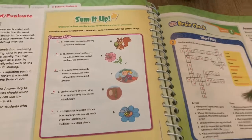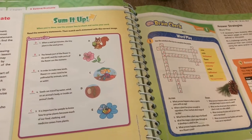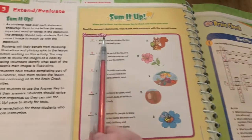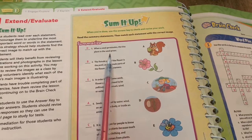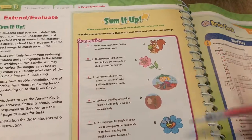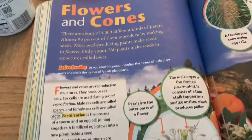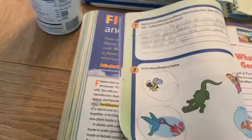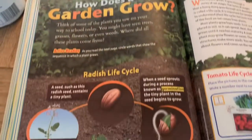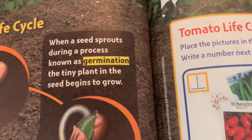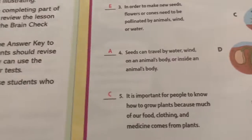Hey boys and girls, we are going to quickly go over the Sum It Up and the Brain Check that you worked on this week. Number one was showing when a seed germinates — the tiny plant in the seed grows. Looking back in our book, germination is talked about on the garden page. Right here I found the word germination, and it shows a seed starting to sprout, so I know the answer is D.